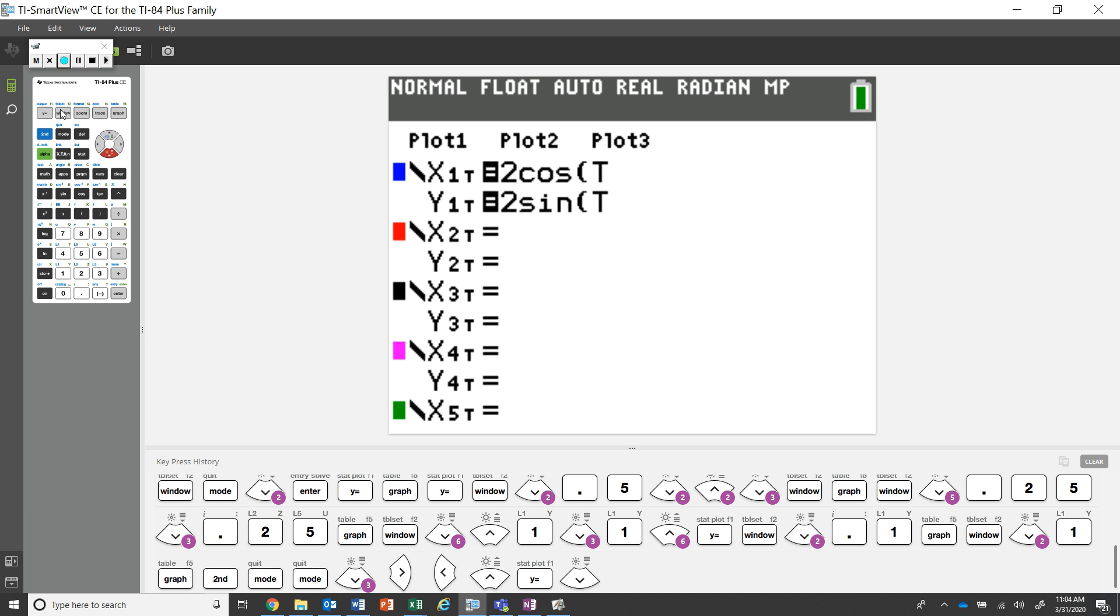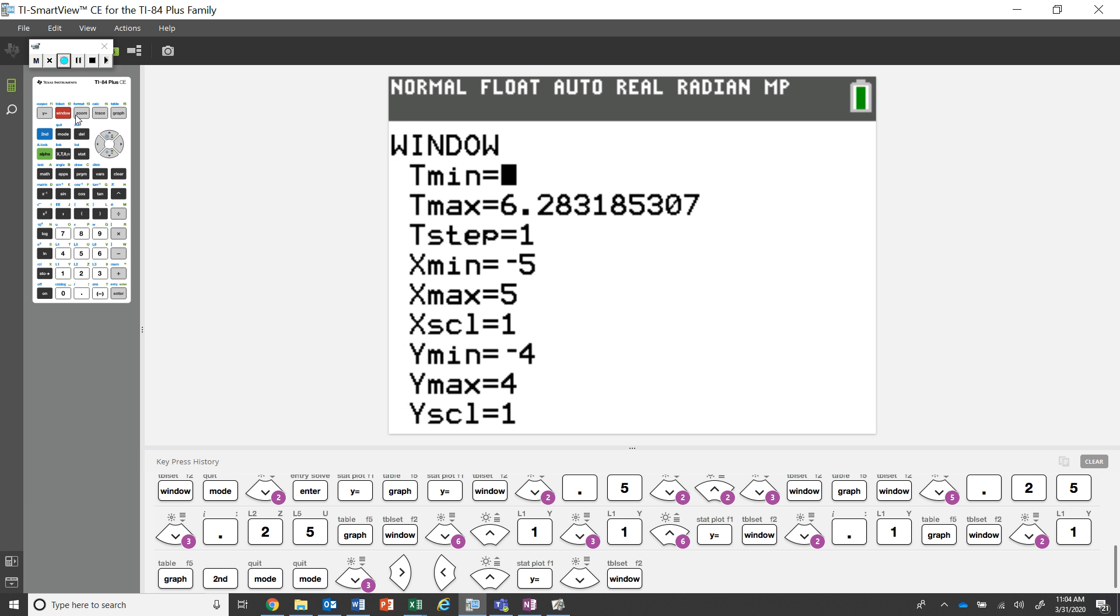So let's go ahead and look at the window. So it said from zero to two pi. So that's what 6.28 is, right? Two pi. So from zero to two pi. I'm going to leave my t step as one for right now. We'll see what happens there. And then for x min and x max, you get negative five to five and then negative four to four. You could have done probably negative three to three. It would have been fine. I'm just trying to show enough information on the graph.